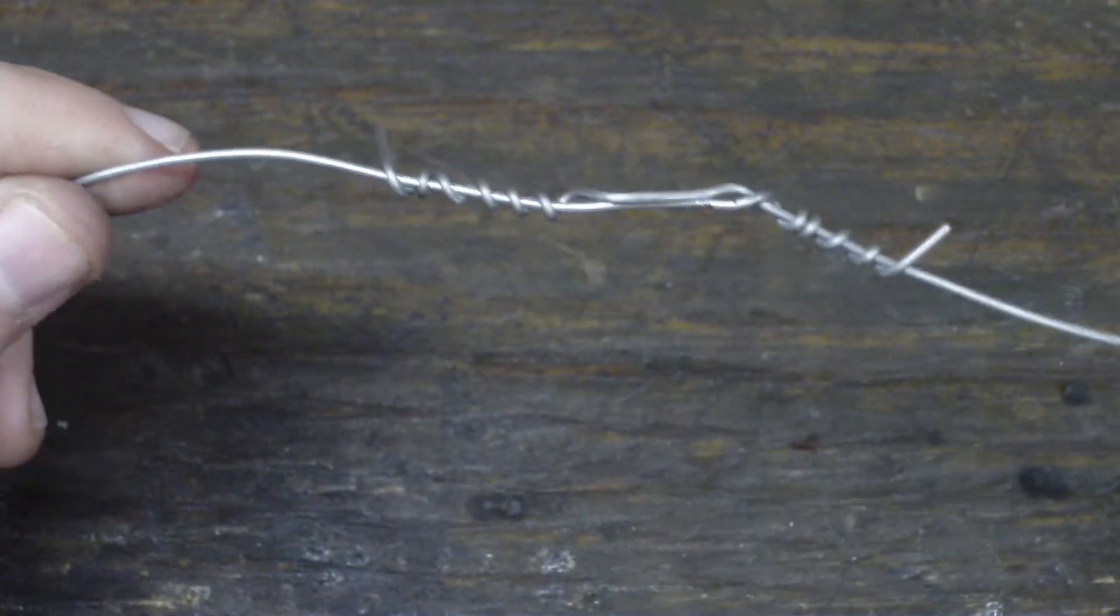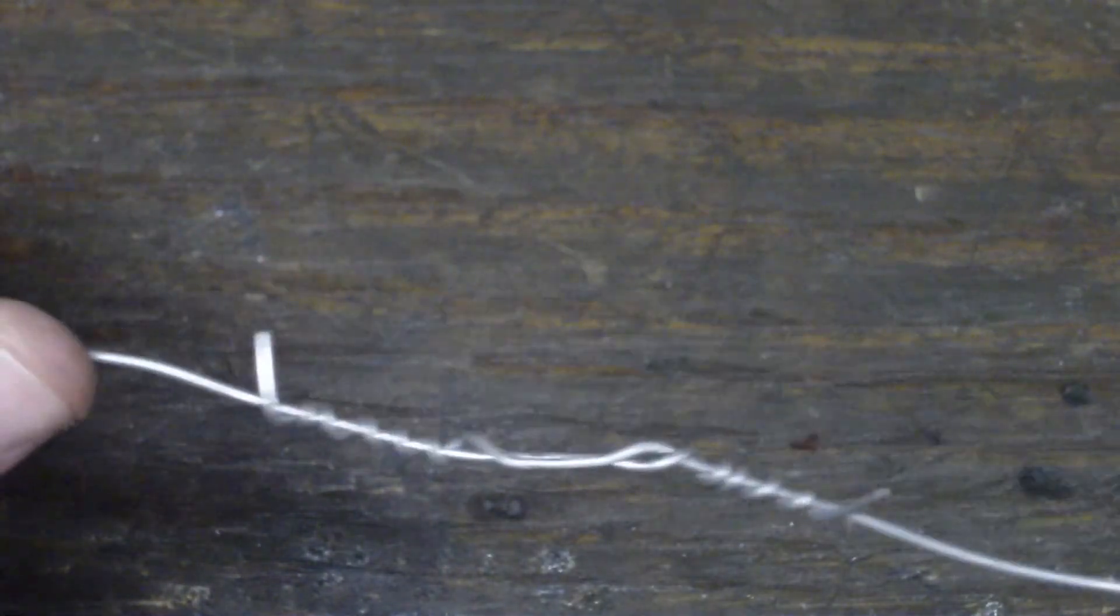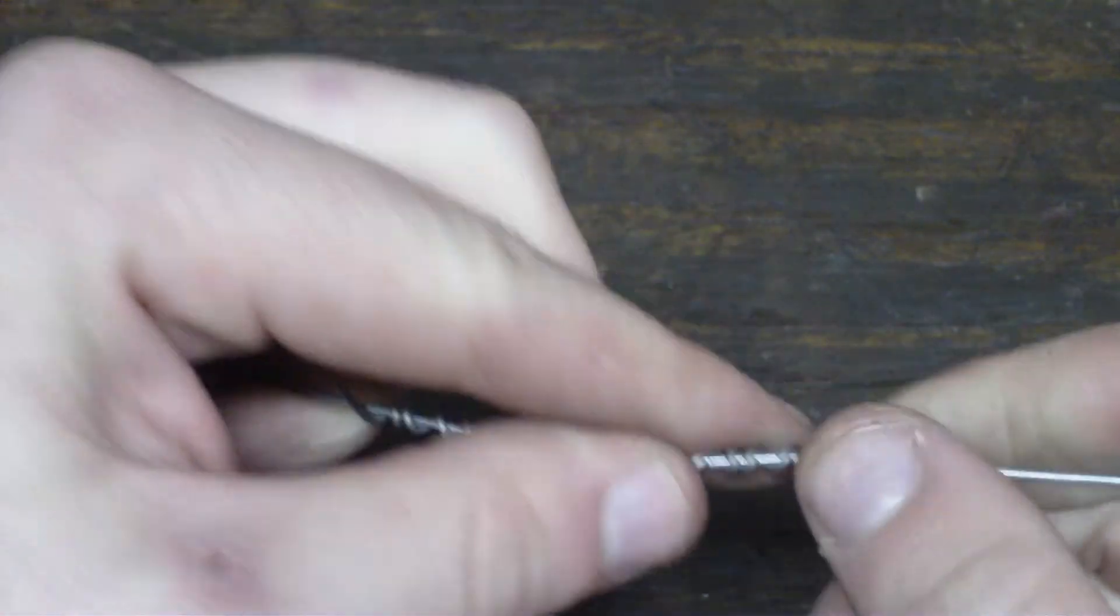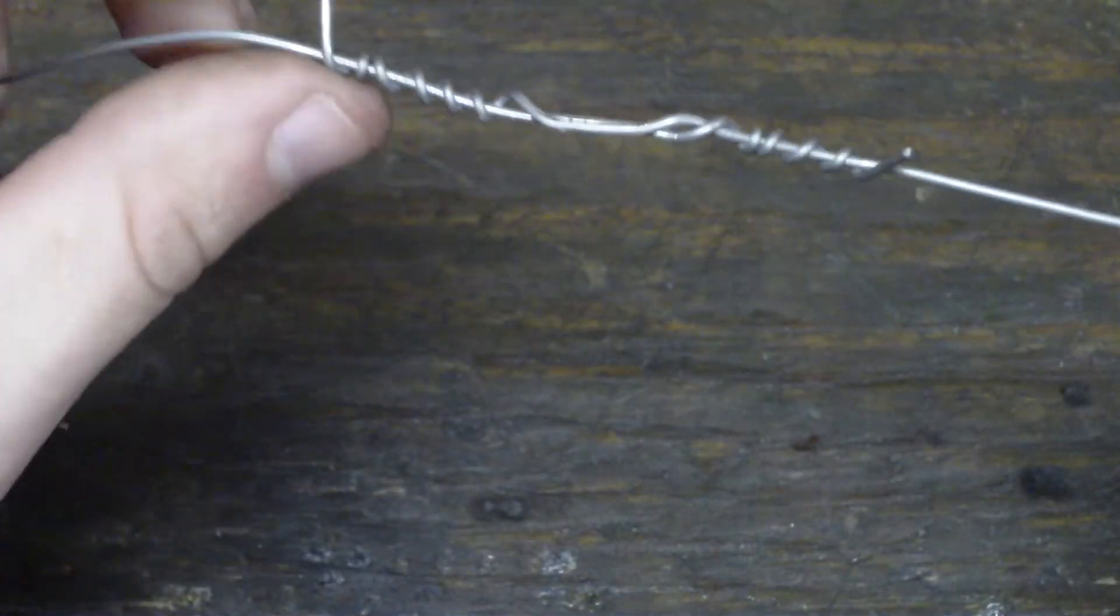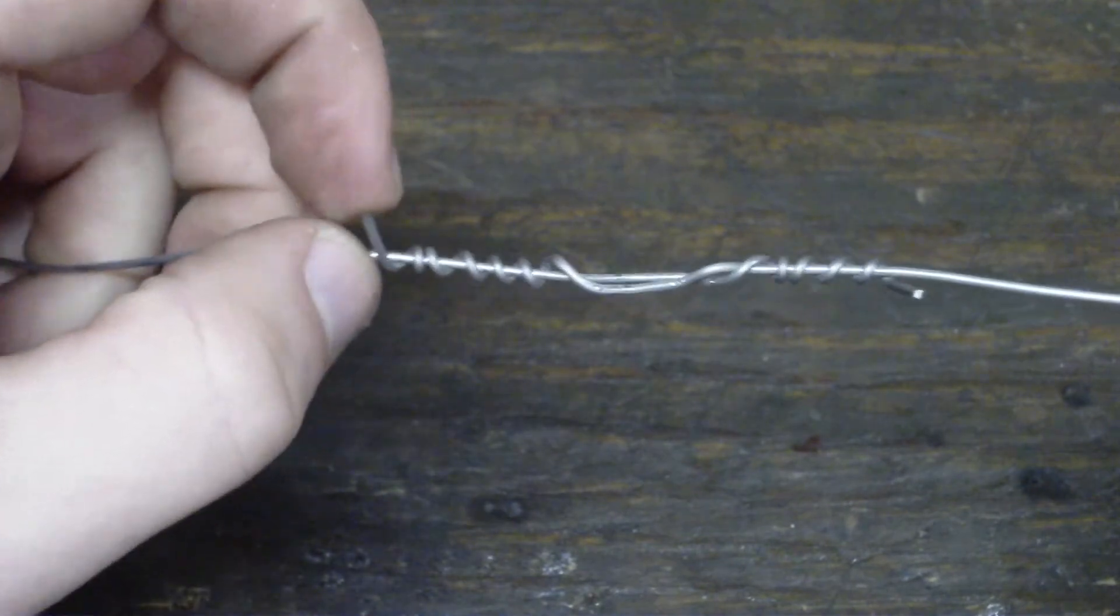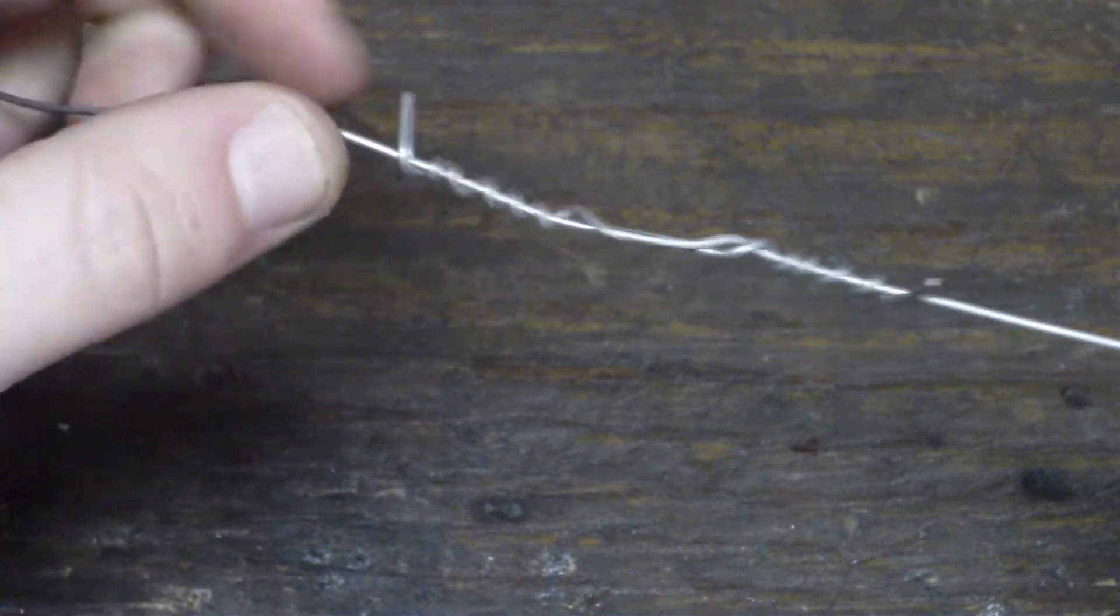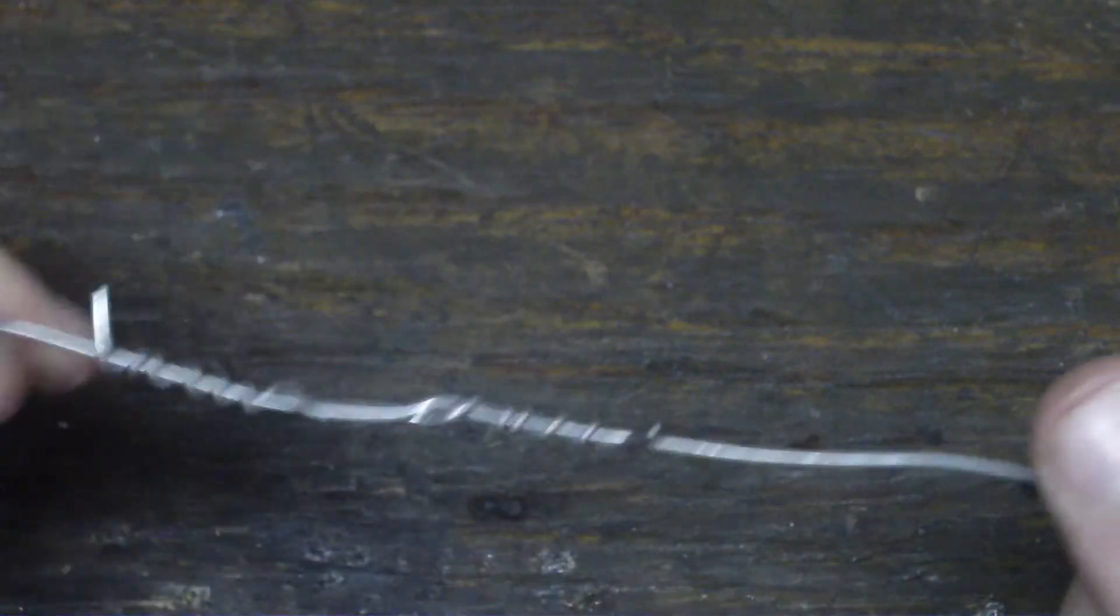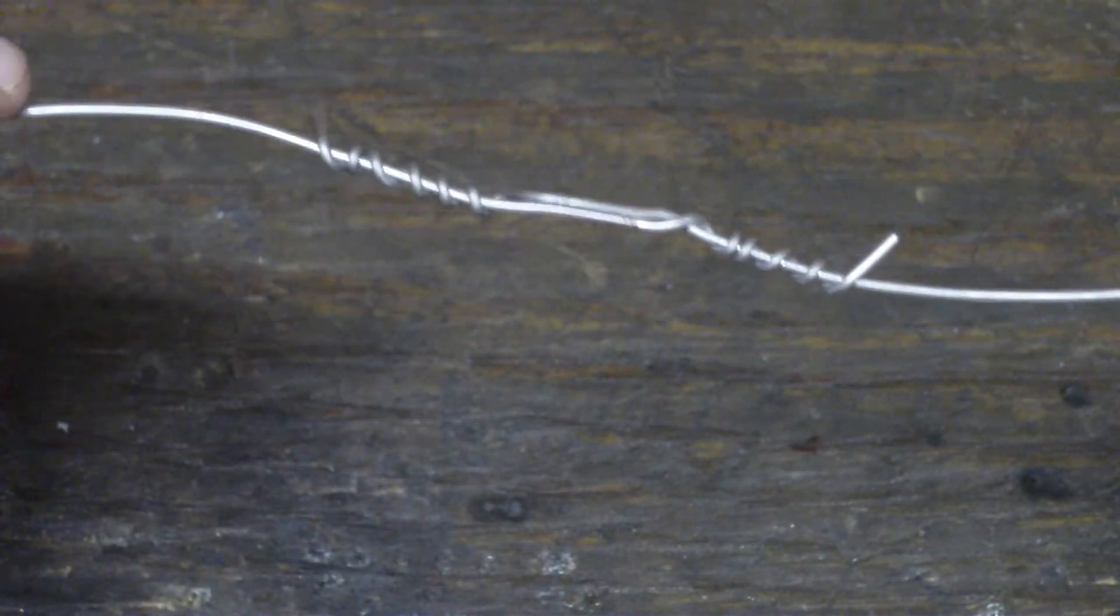Then you just get it hot and melt all your solder in there. You can't hardly pull them apart. It's a real good connection. It's a good electrical connection, and it's pretty strong too. That's how you do a Western Union splice.